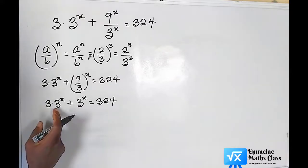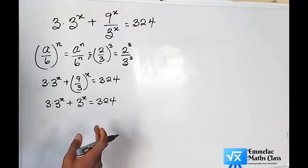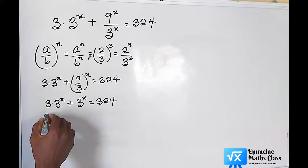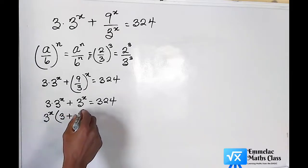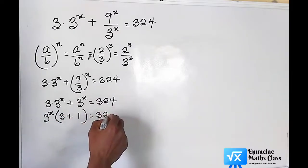You can see that we have a common factor, which is 3 raised to the power of x. Now let us factor out 3 raised to the power of x, then we are left with 3 plus 1, which equals 324.